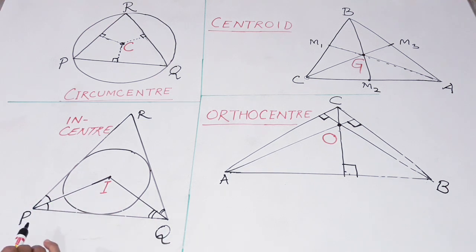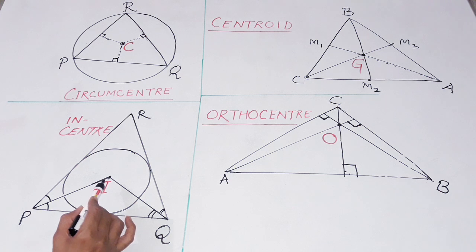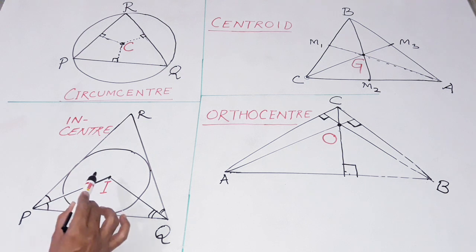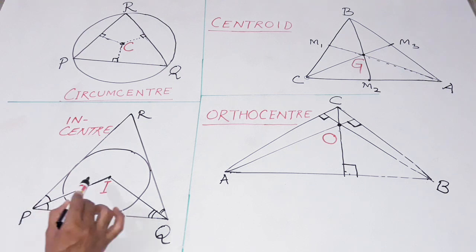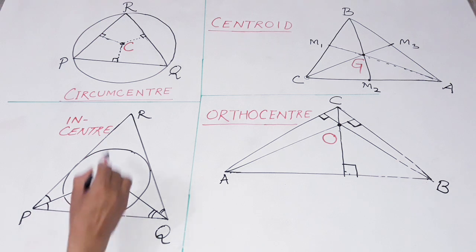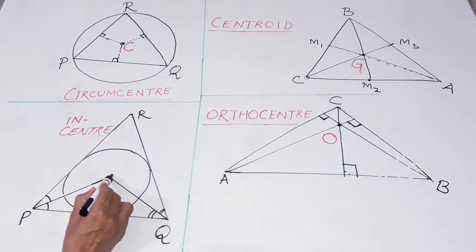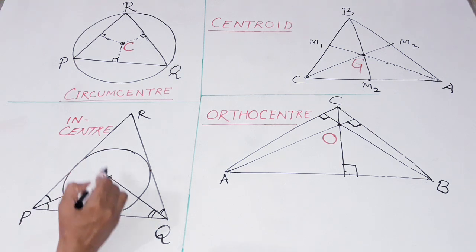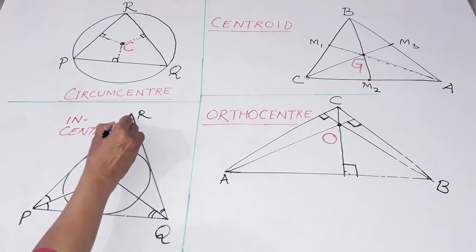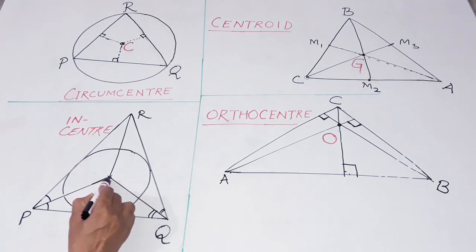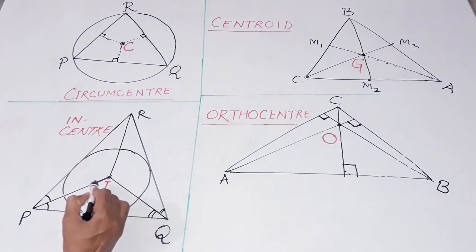Now, the incenter. As the name suggests, it is the center of the incircle of a triangle. It is also defined as the point of intersection of the angle bisectors of a triangle. If we find the point of intersection of any two angle bisectors, then the third angle bisector must pass through the same point. The point of intersection of these angle bisectors is called the incenter of a triangle.